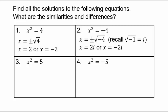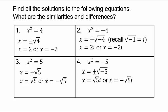For x² = 5, the solutions are x = ±√5. For x² = -5, the solutions are x = ±√5 · i. The difference between the positive and negative cases is that with x² = 4 the radical simplified to 2, while with x² = 5 the radical √5 cannot be simplified further and must remain.